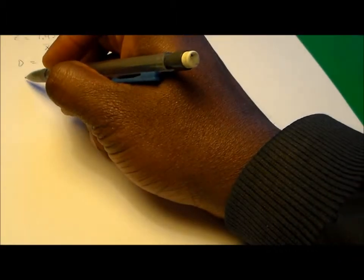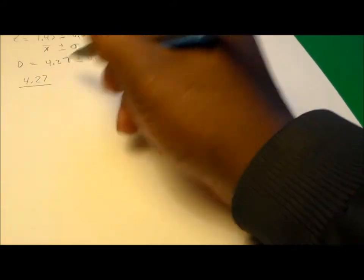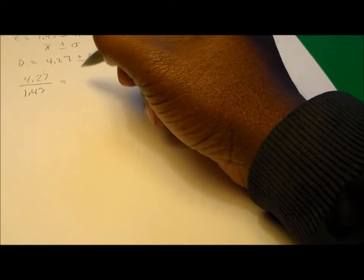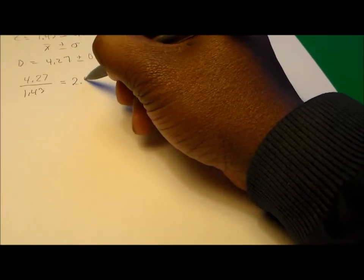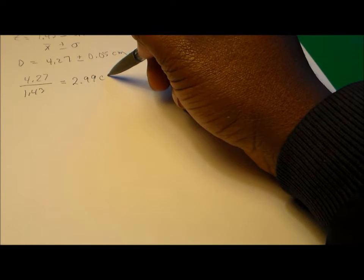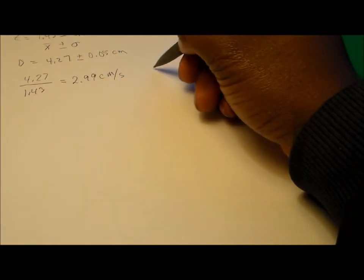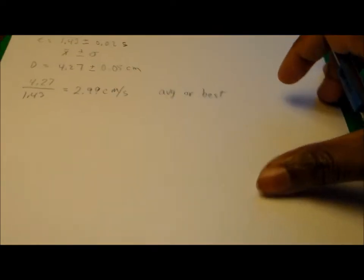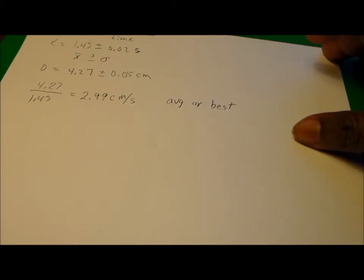If we take these values to find the best or average speed, we take 4.27 divided by 1.43 — those being the averages for distance and time — and we end up with 2.99 centimeters per second as the average, or best value, based on our calculations.